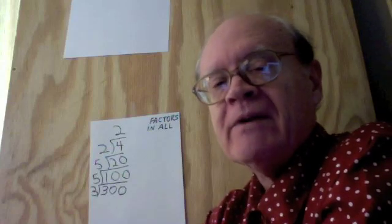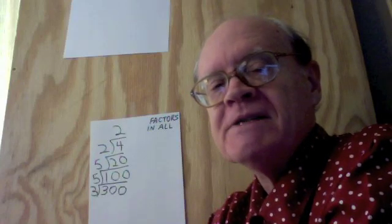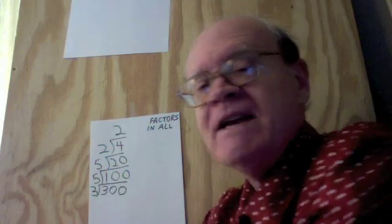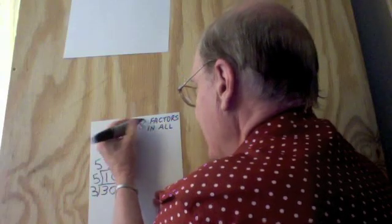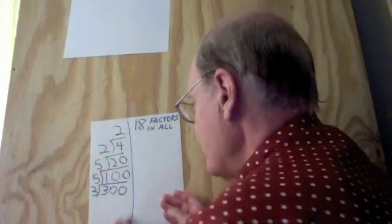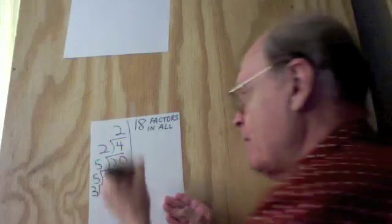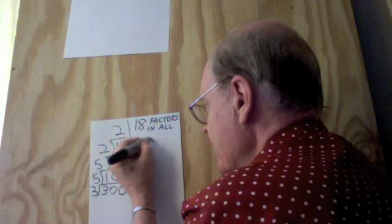I deduce from that that 300 has 18 factors in all. And I will now list them, again starting with 1 and working my way up. I will again list them in pairs. 1 times 300.